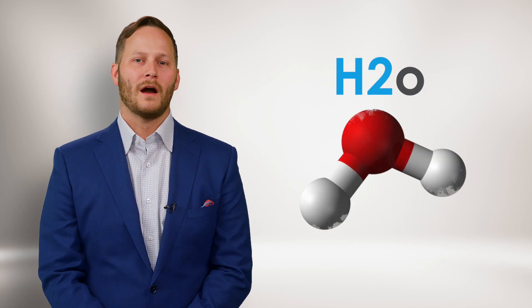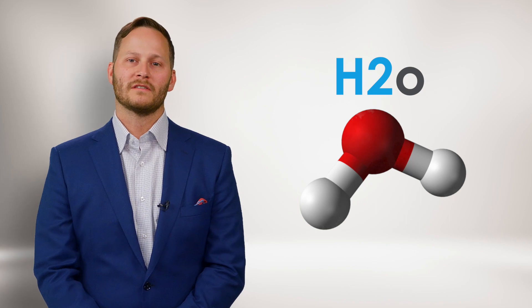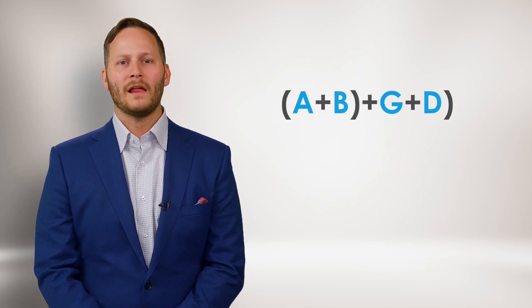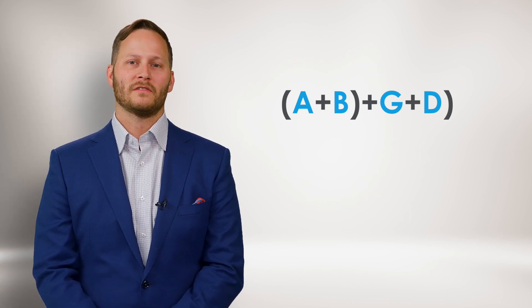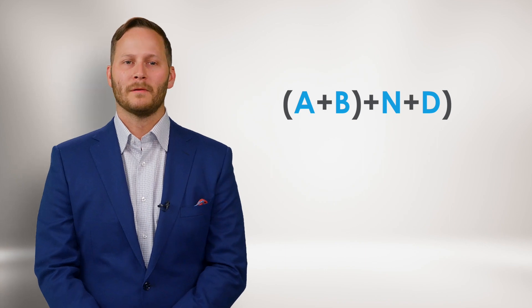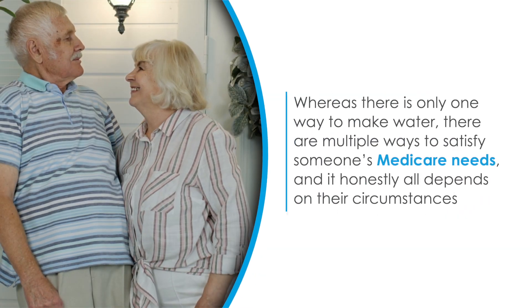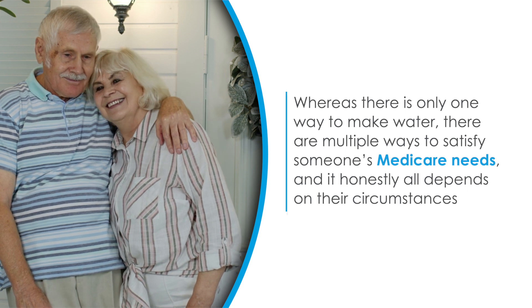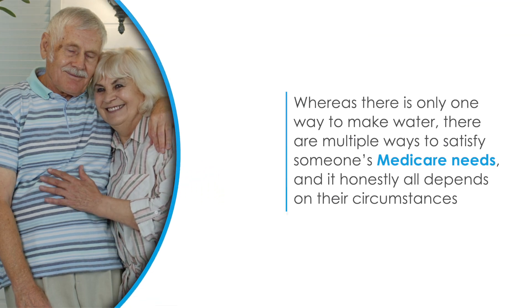When a child looks at the chemical compound of water, they probably think it's just a typo or misprint, but when an adult looks at it, they instantly think water. When I look at A plus B plus G plus D, I think Medicare beneficiaries are set up correctly. But I can also see A plus B plus N plus D and think that. By the same accord, I can think this way about A plus B being less than C plus HIP given the right circumstances. Whereas there is only one way to make water, there are multiple ways to satisfy someone's Medicare needs — it honestly all depends on their circumstances.